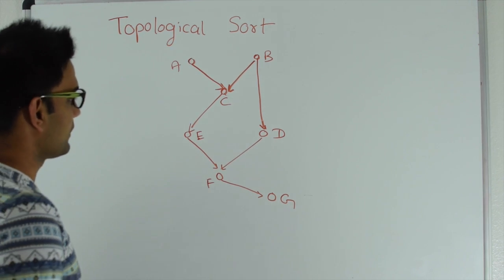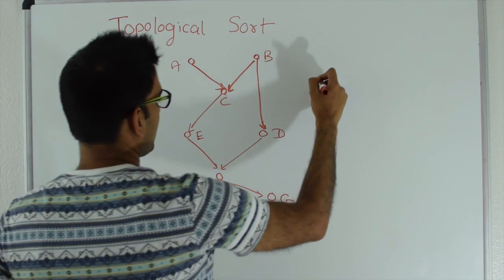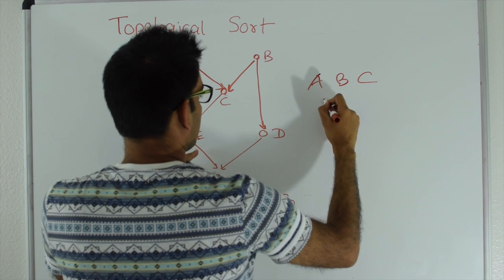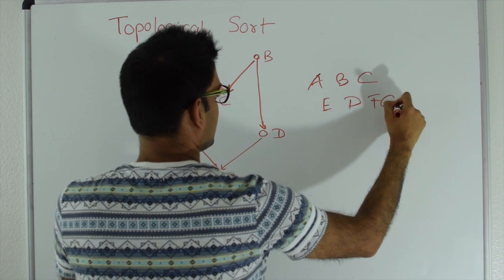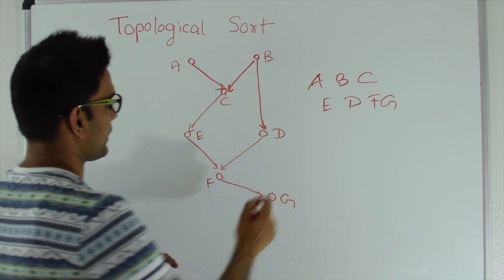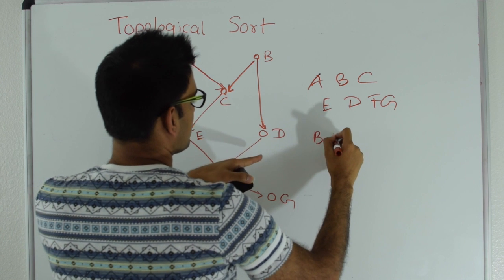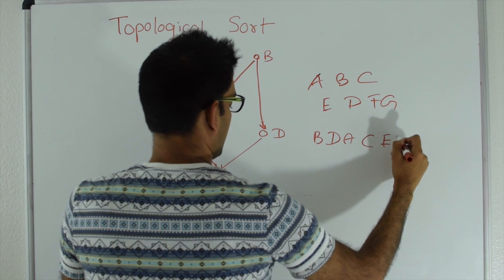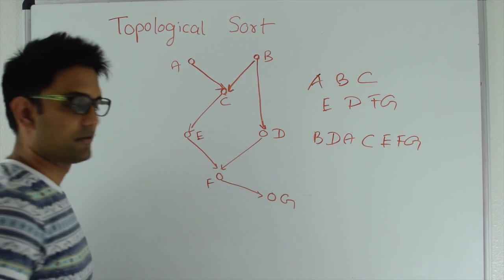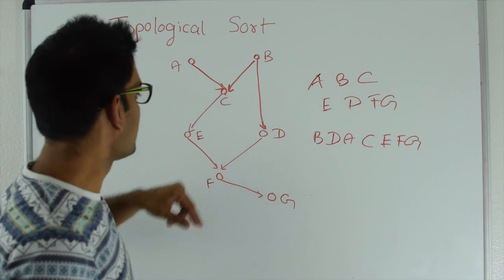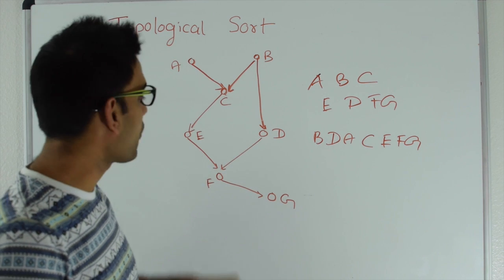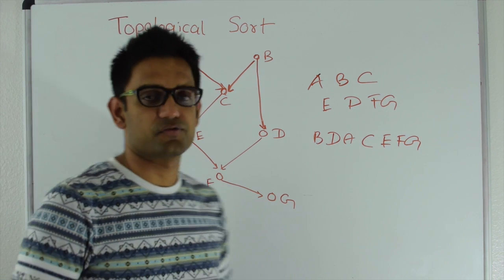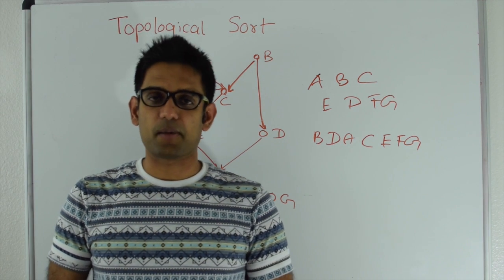For this graph here, one topological sort could be a, b, c, e, d, f, g. Another ordering could be b, d, a, c, e, f, and g. The point is that c should never be before a and b in the ordering, d should never be before b, e should never be before c, and so on.